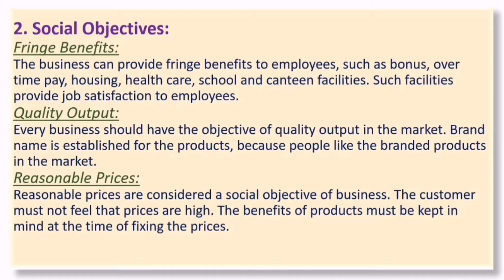The next category is social objectives. The first social objective is fringe benefits. Business can provide fringe benefits to employees such as bonus, overtime pay, housing, health care, school, and canteen facilities. Such facilities provide job satisfaction and keep the body and soul of employees together, giving them a boost towards the development of the organization.